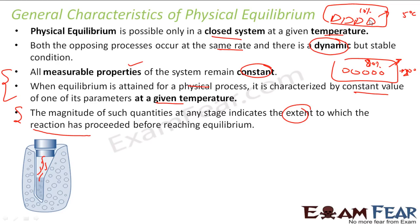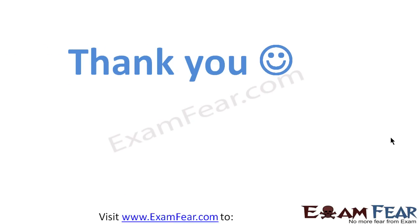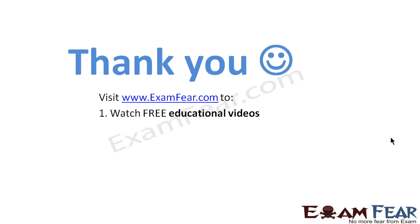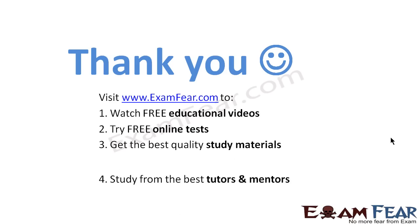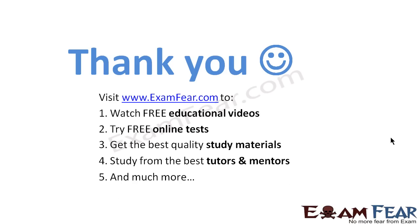So the first and foremost requirement for physical equilibrium is: it has to be a closed system at fixed temperature, it is dynamic, and all measurable properties are constant. If you want to find how much the reaction has proceeded before reaching equilibrium, you have to understand the quantities of the system and calculate accordingly. Thank you. Visit examfear.com to watch free educational videos, try free online tests, get the best quality study materials, and study from the best tutors and mentors. Thanks again.